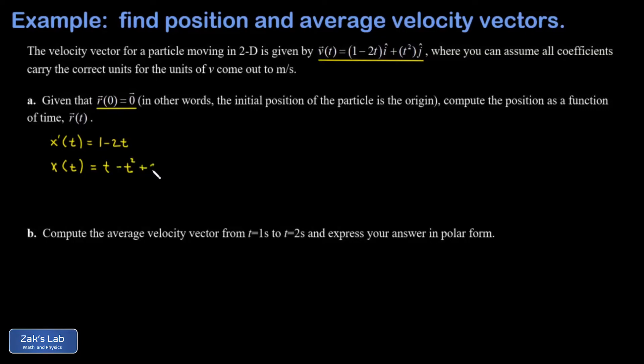But that comes with an arbitrary constant plus c, and that's where our initial condition comes in. If our initial position is the zero vector that means the initial x coordinate is 0. So x of 0 is 0, but if I plug in t equals 0 here I get 0 minus 0 squared plus c.